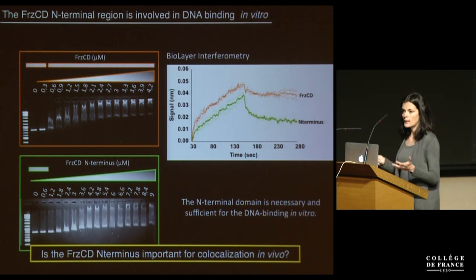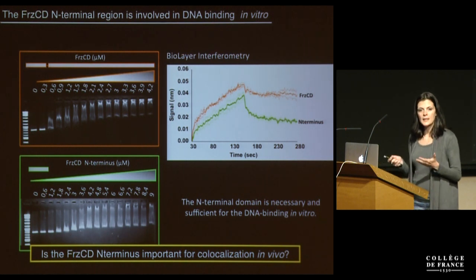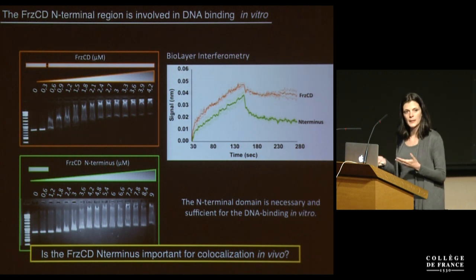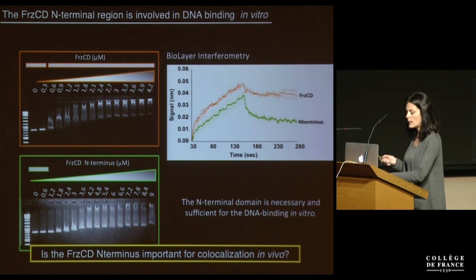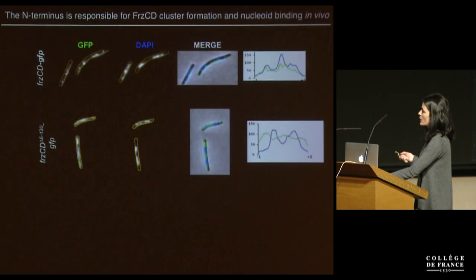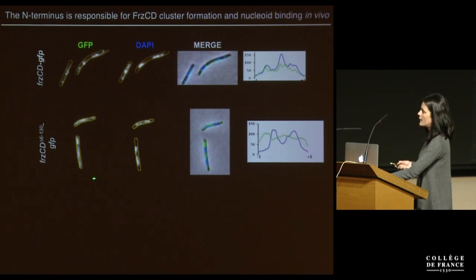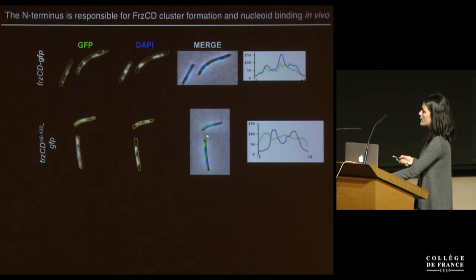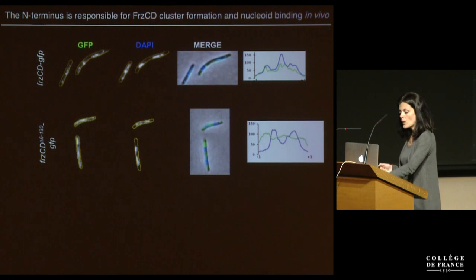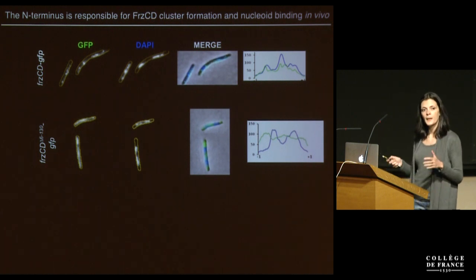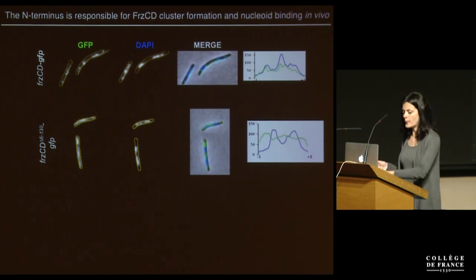Another question was whether this N-terminus is important for DNA binding in vivo as well. We generated a strain lacking the N-terminal domain, and now FrzCD is incapable of forming clusters and basically incapable of binding the nucleoid, as we find it everywhere in the cells. So FrzCD can bind DNA with its N-terminal domain.